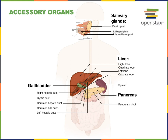The liver produces bile, which is important for emulsifying lipids, facilitating the chemical digestion and absorption of lipid-soluble nutrients. Bile enables emulsification — it enables lipids to become suspended in small droplets mixed throughout a watery solution — which allows digestive enzymes to access lipid-soluble nutrients. For example, the digestive enzyme lipase, produced by the pancreas, can catalyze hydrolysis of triglycerides, releasing fatty acids that can then be absorbed across the wall of the jejunum into the lymphatic lacteals.